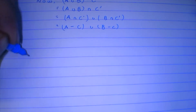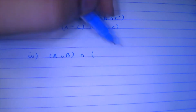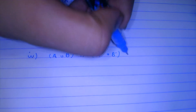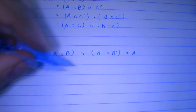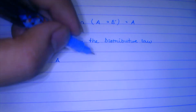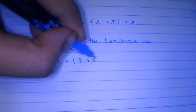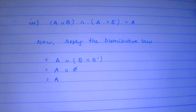The fourth one is: (A union B) intersection (A union B complement) equals A. You might be surprised by the simplicity of it. If you just straightforwardly apply the distributive law, A is common so we take it out: A union (B intersection B complement). B intersection B complement is empty, so it becomes A union phi, which is simply A. Yes, it is that simple.